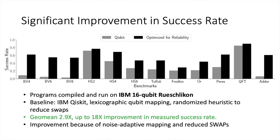We compared the performance of our compiler to the Qiskit compiler. Qiskit is a widely used compiler developed by IBM and provided as the default for their systems. Our compiler obtains a 3x improvement in program success rate, with up to 18x on some benchmarks. This means we have a significantly better chance of executing programs correctly and extracting the best performance offered by noisy hardware.